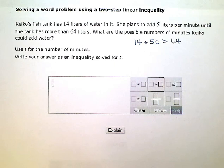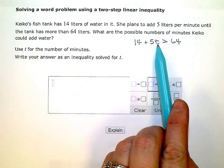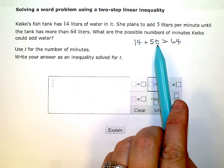What are the possible number of minutes Keiko could add water? So there's my inequality. I just need to solve it now. So I need to isolate or get the T by itself. This is going to take two steps of algebra.